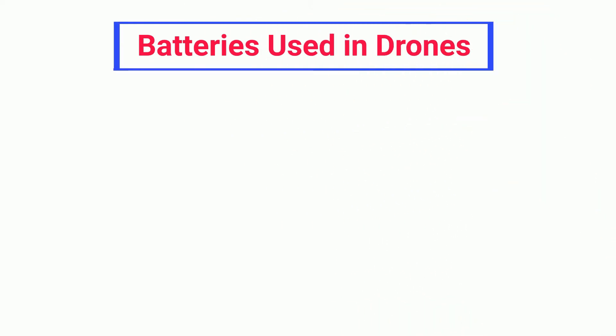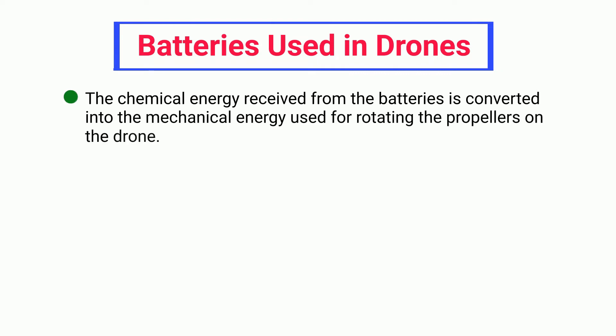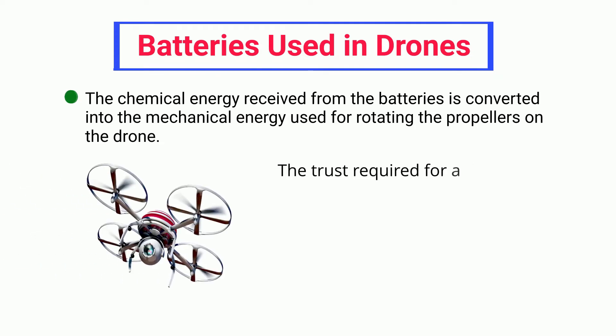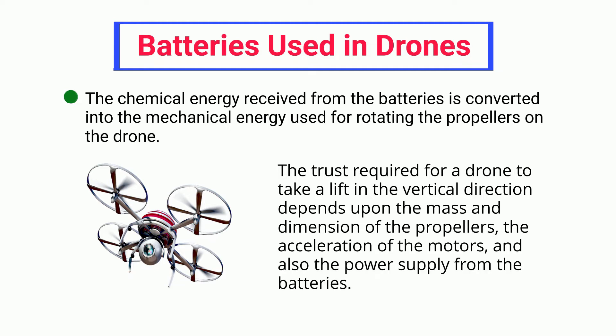Batteries used in drones: the chemical energy received from the batteries is converted into the mechanical energy used for rotating the propellers on the drone. The thrust required for a drone to take lift in the vertical direction depends upon the mass and dimension of the propellers, the acceleration of the motors, and also the power supply from the batteries.